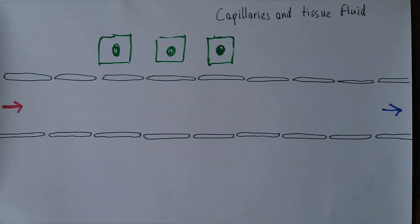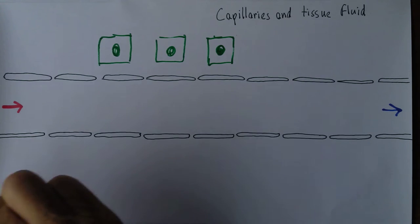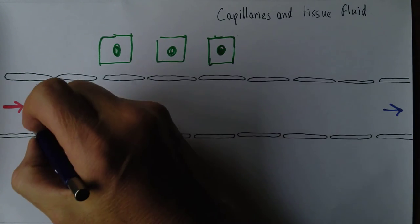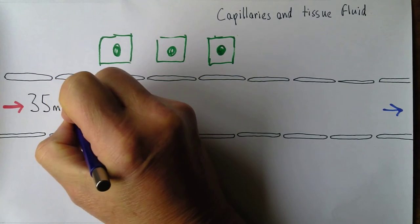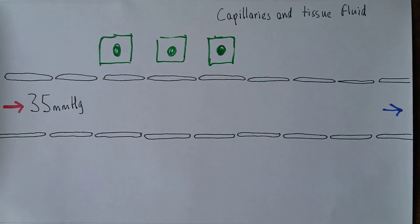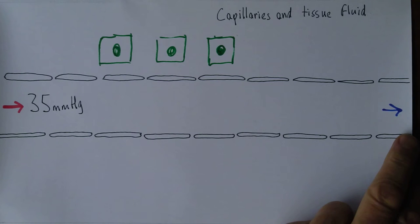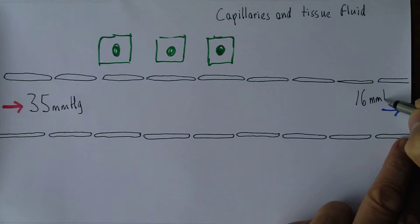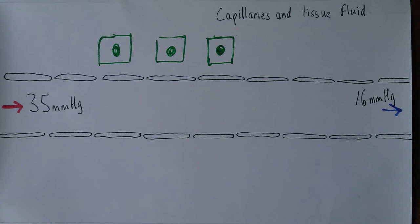You do see slightly different figures quoted, but the pressure in the arterioles is relatively high — it has the effect of cardiac contractions propelling blood through the arterial system. When the blood comes into the arterial end of the capillary it's about 35 millimeters of mercury pressure. Then as it goes through, the pressure drops, and by the time we get to the venous end it's down to about 16 millimeters of mercury, because the venous system is a lower pressure system than the arterial system.